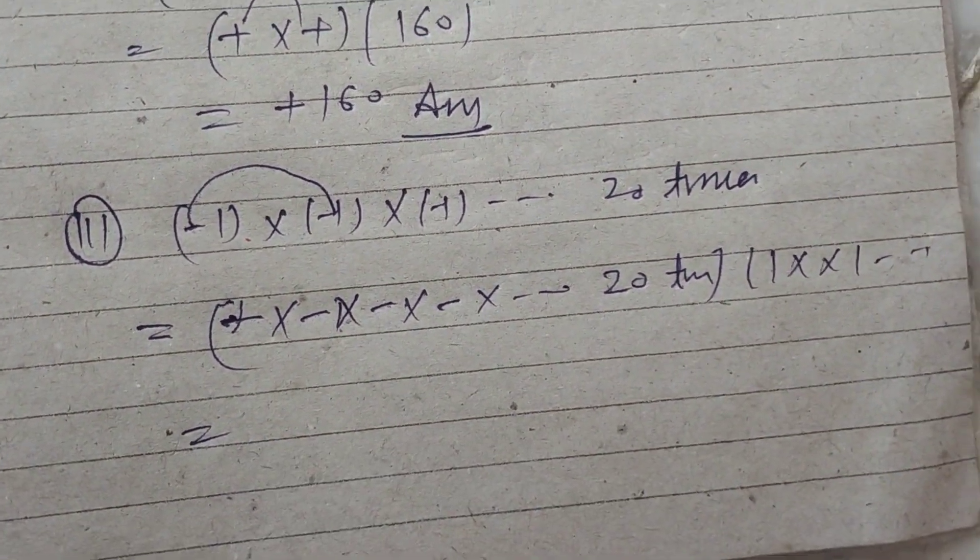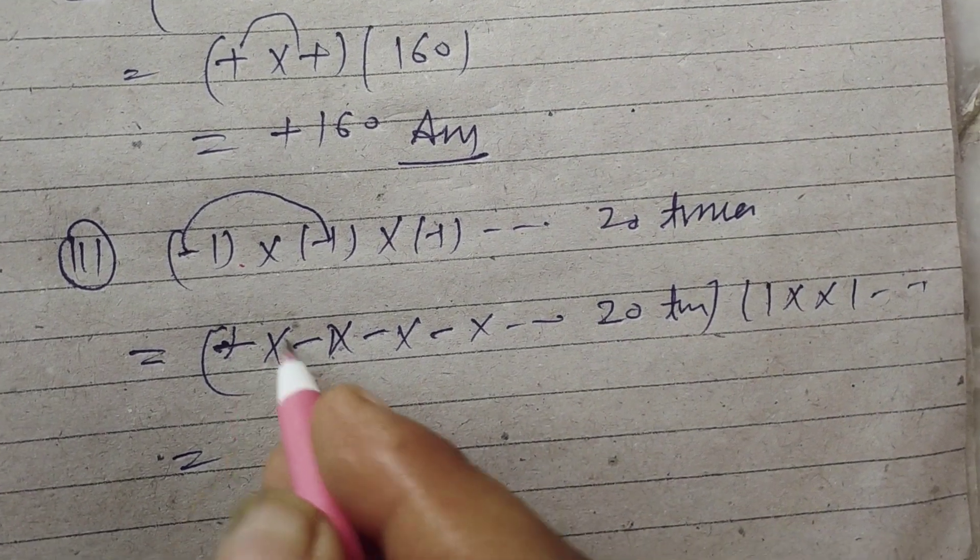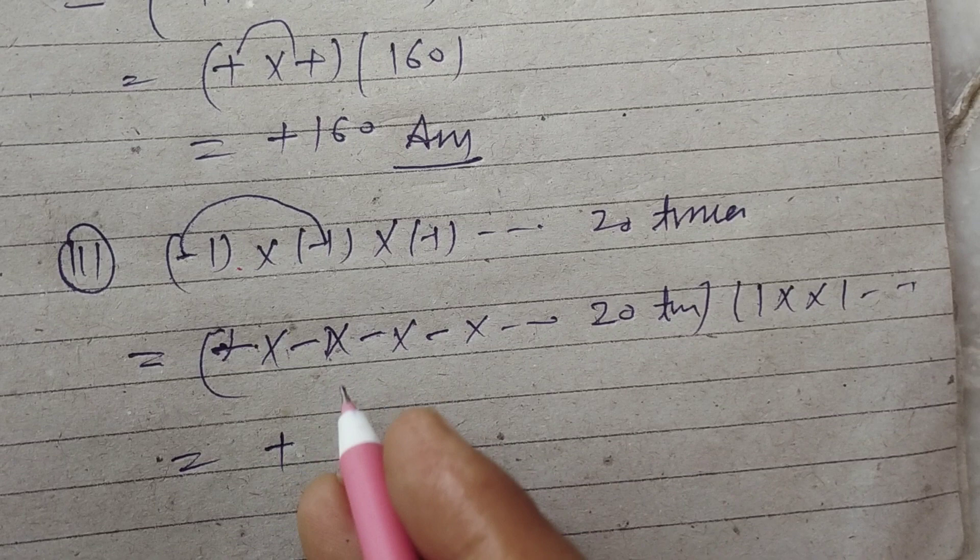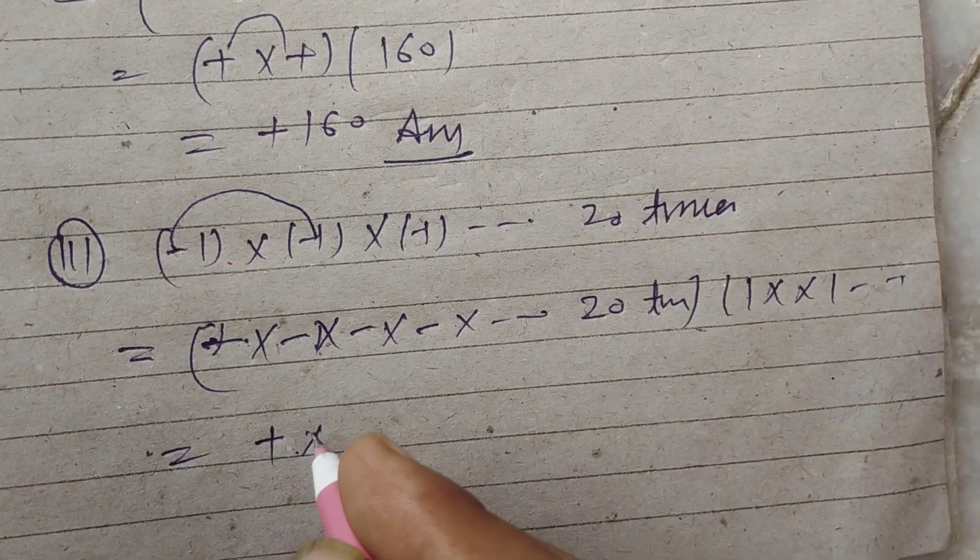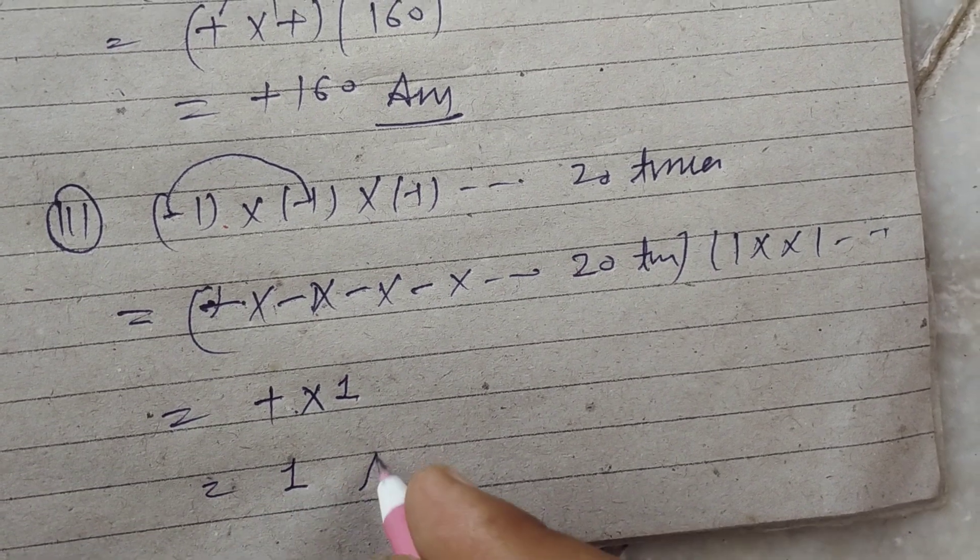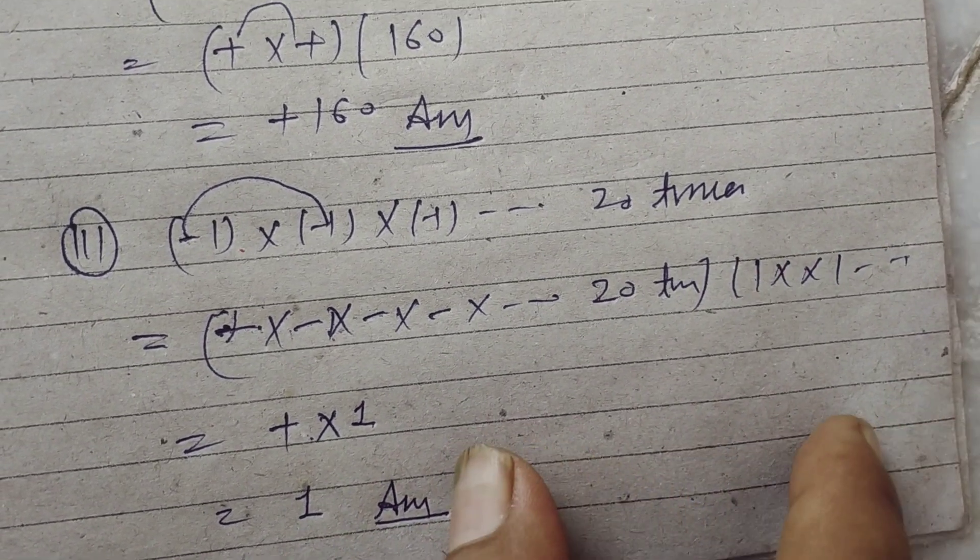When we multiply minus 20 times, we get positive. Because two negative multiplications give us positive. Therefore, this is positive times 1. So the answer is positive 1.